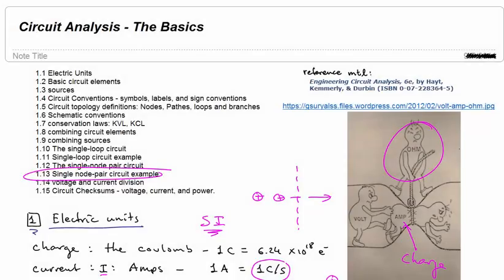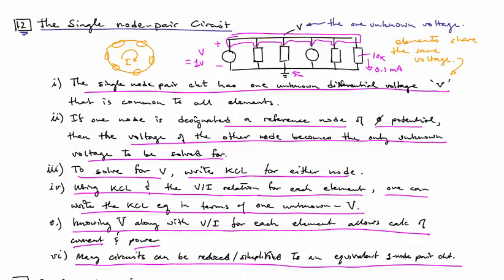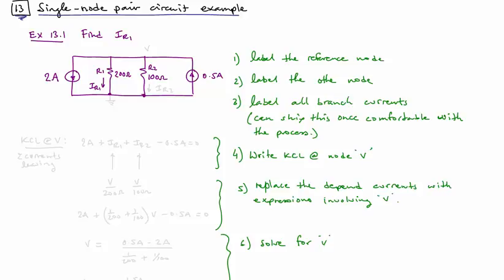We're now going to look at a couple of single-node pair circuit examples. So we are asked to find the current through the resistor IR1 right here, and we're going to follow the steps outlined here.